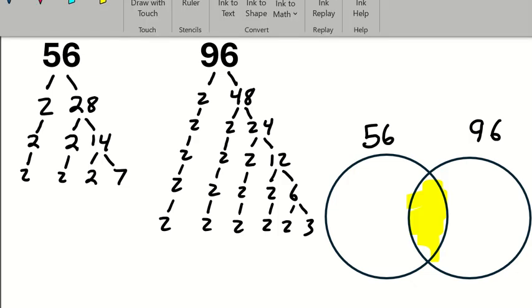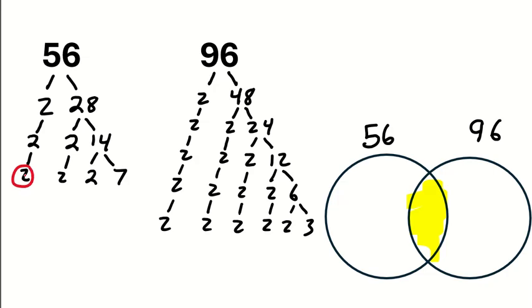So, I have a 2 here and I have a 2 here. So, I can represent both those 2's in the middle because the circles overlap. And I have a 2 on this side and I have a 2 on this side so I can represent that 2 in the middle. I have a 2 over here and I got a 2 over here so I can go ahead and represent that in the middle because they overlap.